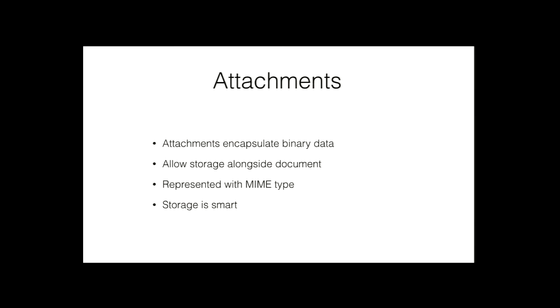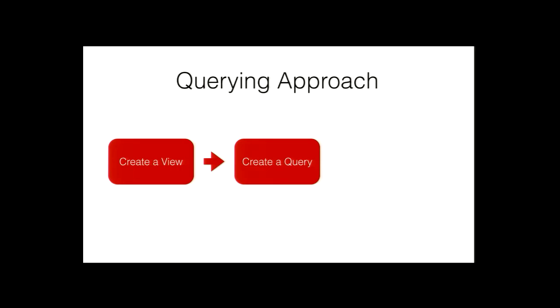Their querying approach uses views — not UI views — where you create a view, create a query, and run the query. Views are basically an index on your documents. They're created through MapReduce. For people coming from .NET, it's a lot like the Select function — map is like Select in LINQ. The aggregate is like reducing. They map around all the documents in data storage.